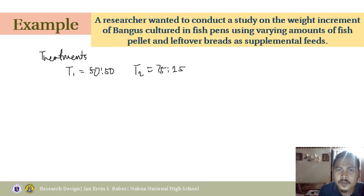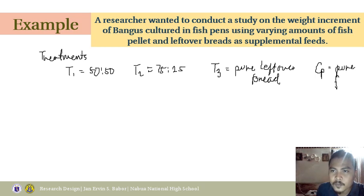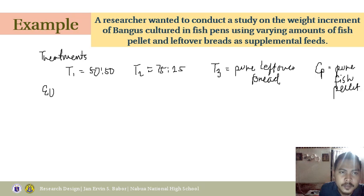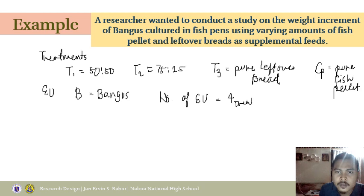T3 is pure leftover bread. T4, your positive control, is pure fish pellet. Your experimental unit (EU) is bangus. You can code bangus as letter B, which stands for a single experimental unit bangus. To calculate the number of EUs needed in the experiment, multiply the number of treatments by the number of replicates.